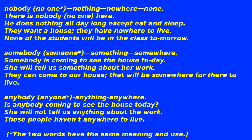Nobody/no one/nothing/nowhere/none — 'There is nobody here'; 'He does nothing all day long except eat and sleep'; 'They have nowhere to live'; 'None of the students will be in the class tomorrow.' Somebody/someone/something/somewhere — 'Somebody is coming to see the house today'; 'She will tell us something about her work'; 'That will be somewhere for them to live.' Anybody/anyone/anything/anywhere — 'Is anybody coming to see the house today?'; 'She will not tell us anything about the work'; 'These people haven't anywhere to live.' The two words in each pair have the same meaning and use.